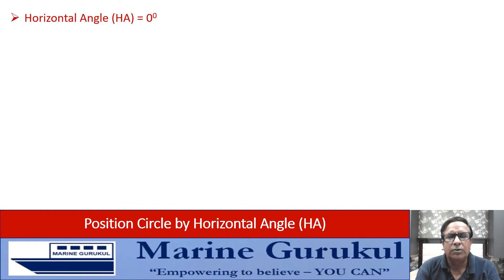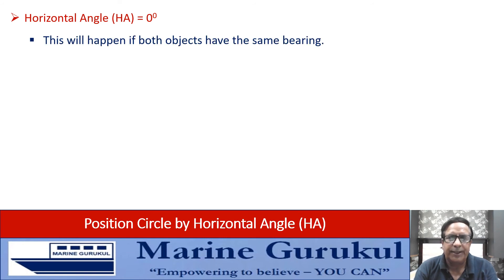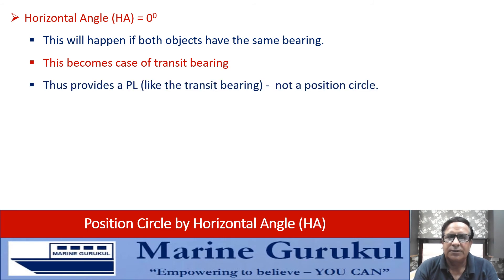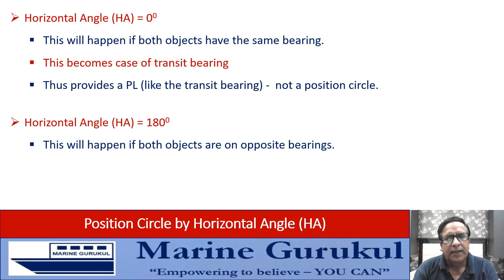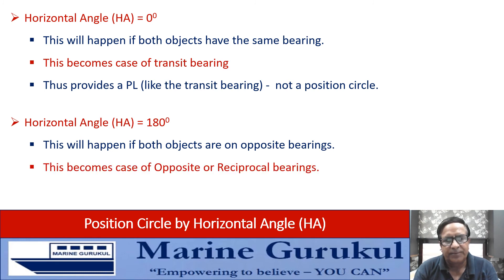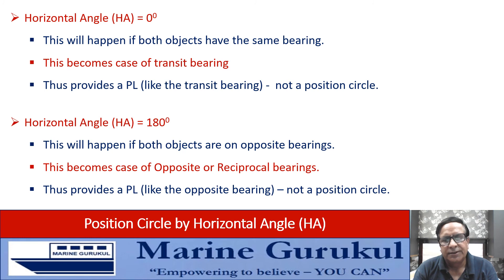There is also a case where the horizontal angle equals 0°, meaning the bearing of both objects is the same. This becomes a case of transit bearings, providing a position line by transit bearing rather than a position circle. If the horizontal angle is 180°, the bearings are separated by 180° and the objects are on reciprocal bearings — in this case we get a position line which is the segment joining the two objects, not a position circle.